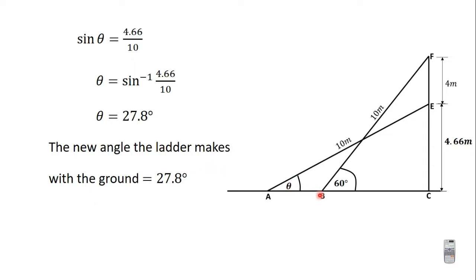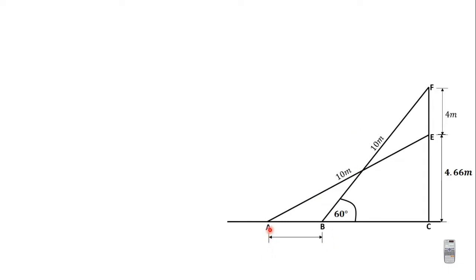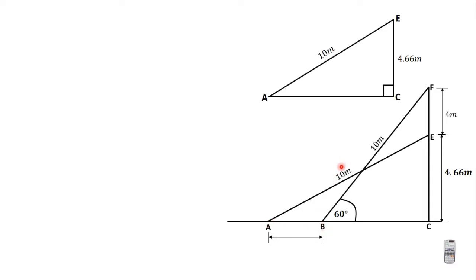The foot of the ladder used to be at B, and because it slipped back it came to A. So we are going to find the distance between A and B — that is the distance AB we are interested in.